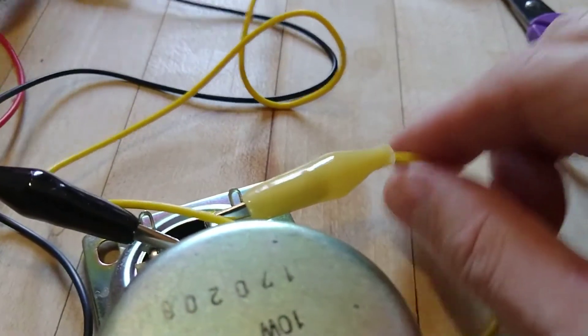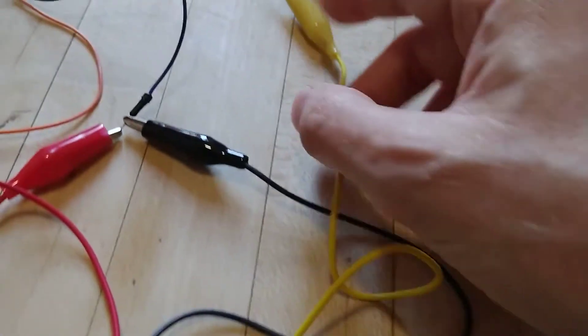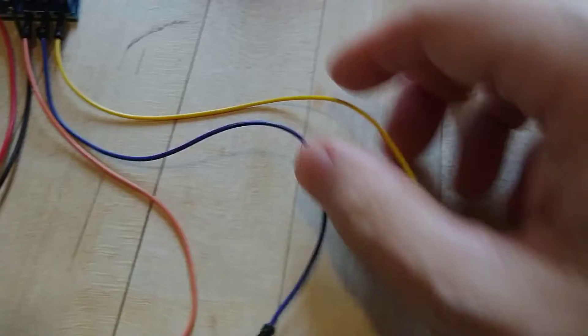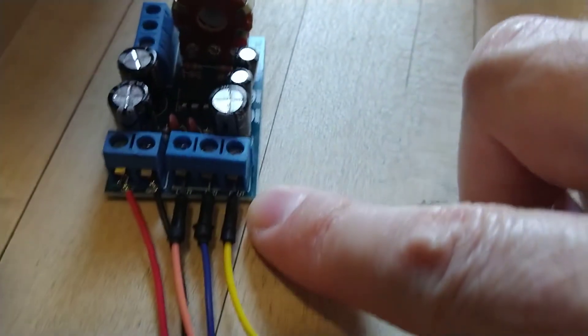Alright, this yellow one is your signal for the speaker, and so this yellow alligator clip is going to a yellow jumper wire which is going to right out at the circuit board.